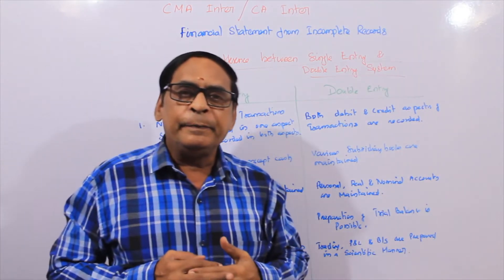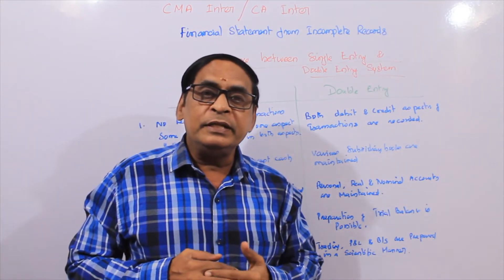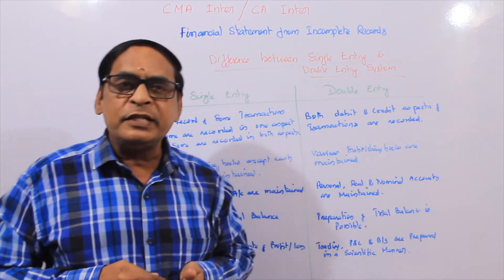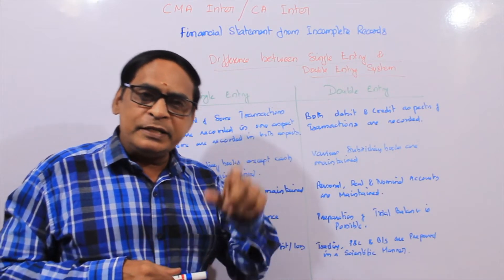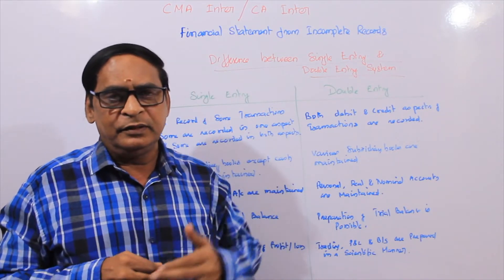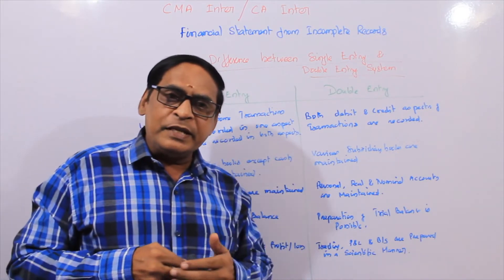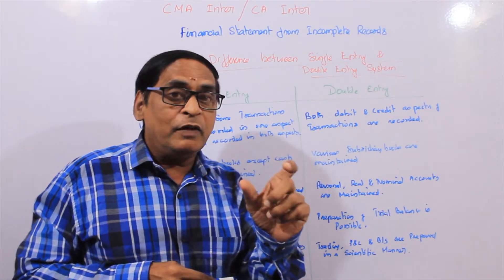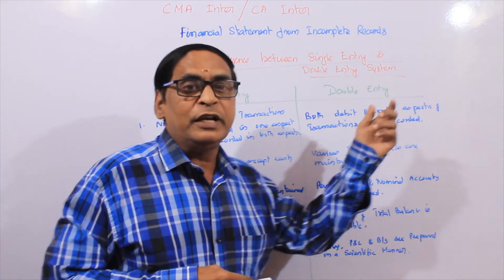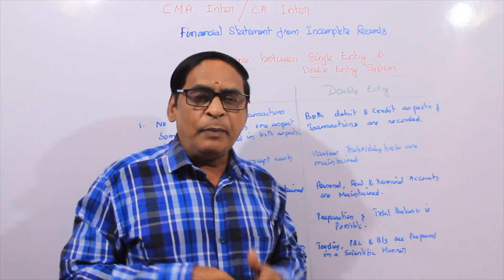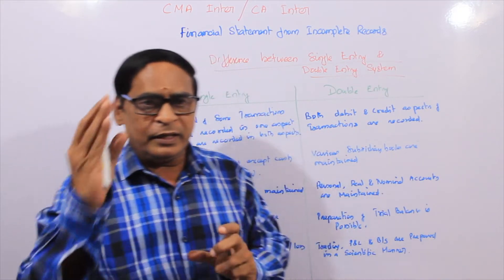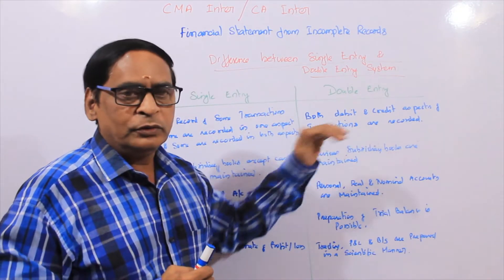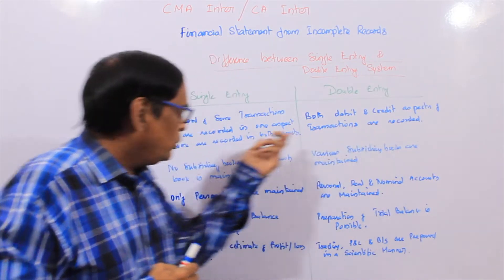In double entry system, both debit and credit aspects of transactions are recorded. For example, a purchase — whether cash purchase or credit purchase — has both a debit effect and a credit effect. Both of them are valid. This is accurate.